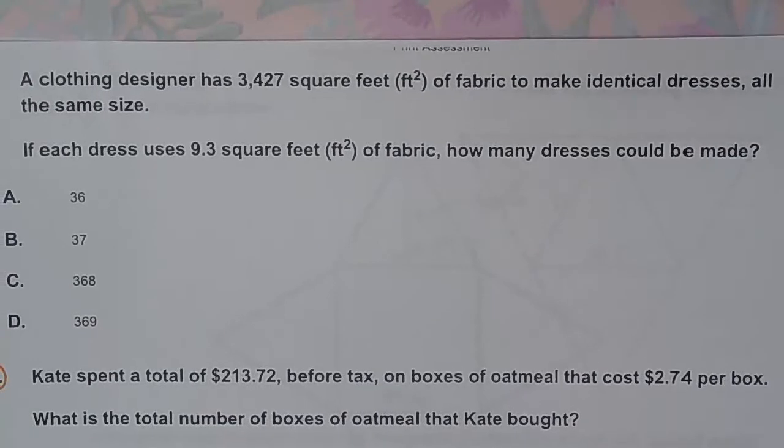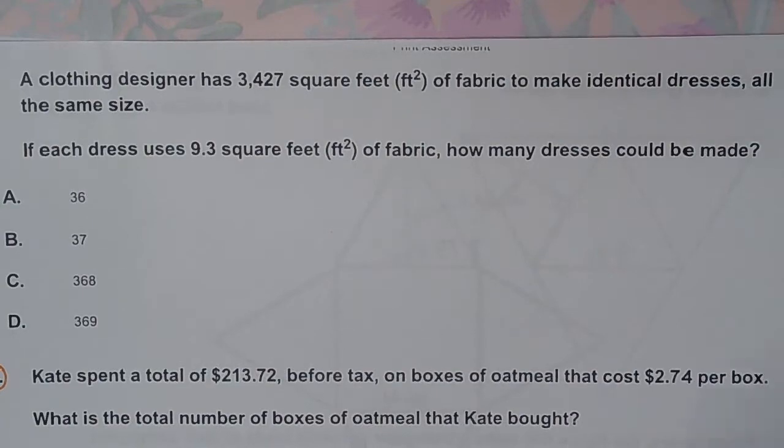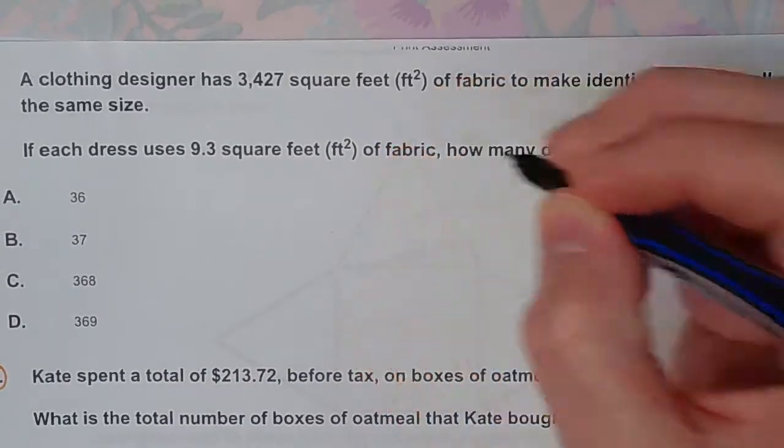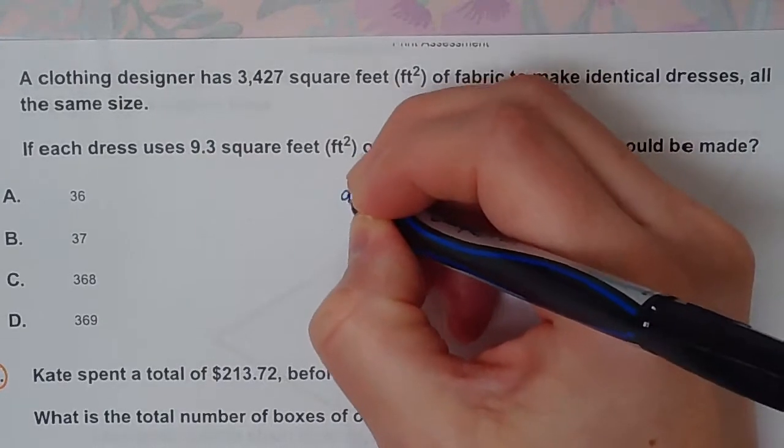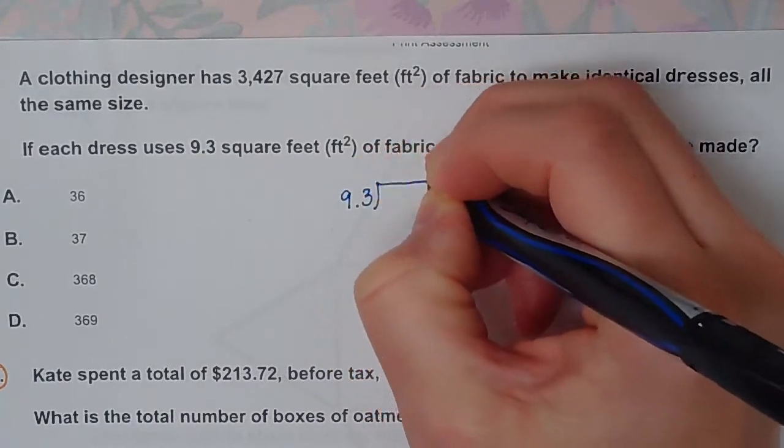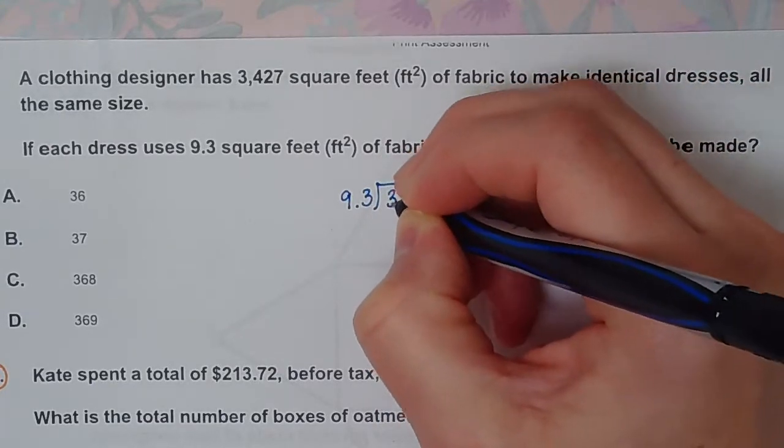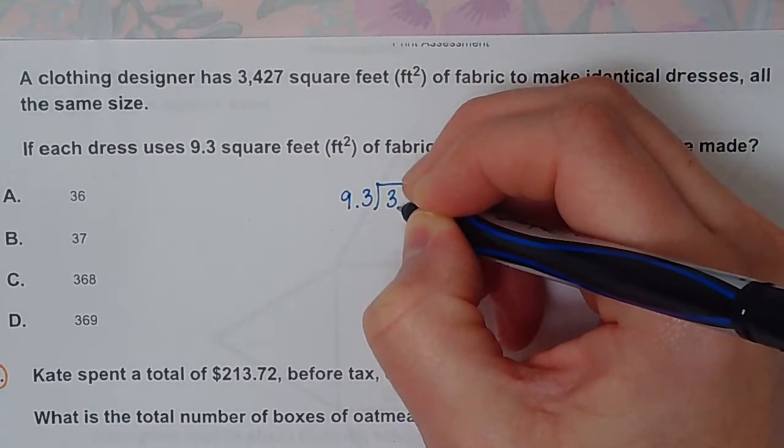A clothing designer has 3,427 square feet of fabric to make identical dresses, all the same size. If each dress uses 9.3 square feet of fabric, how many dresses could be made? So this one right here, we are dividing. Once again, you're taking something big and cutting into something smaller. So 9.3 on the outside because that's how much each dress is.